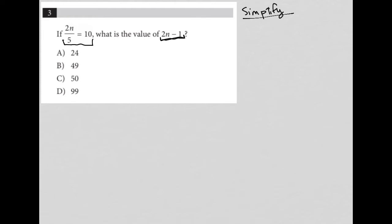So what we want to do is go to the equation in this case and see, what can I simplify? So I'm going to rewrite the equation, 2n divided by 5 equals 10.